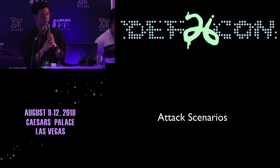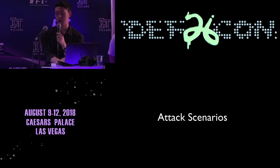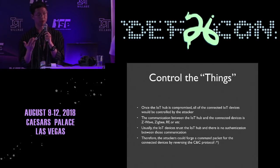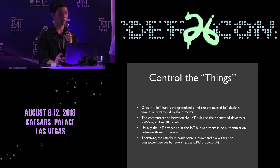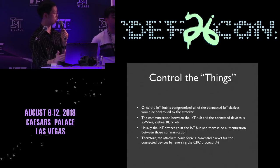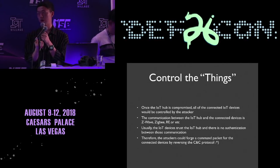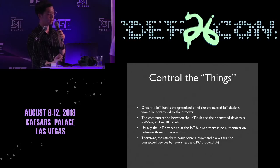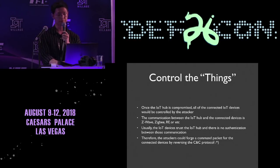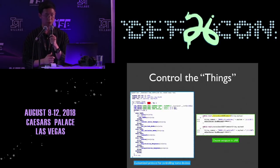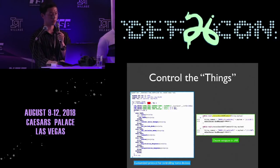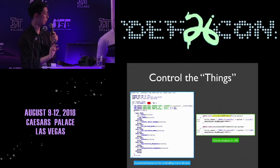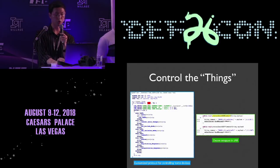Now let's look at attack scenarios possible with identified vulnerabilities. The first scenario controls connected things. If an attacker gains control of a hub device, all IoT devices connected to it can be controlled. Hubs and devices communicate wirelessly via ZigBee, ZWave, and RF with no authentication between them. We can manipulate command packets to control devices or forge status information. The hub recognizes specific fields in packets as control codes and sends commands to relevant devices. If the main process is implemented as a Java application, payloads are sent in a specific format, and by delivering packets in that format, we can control devices as desired.